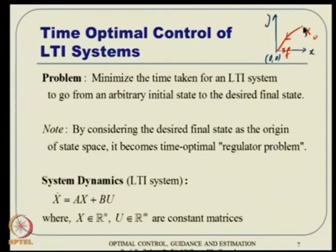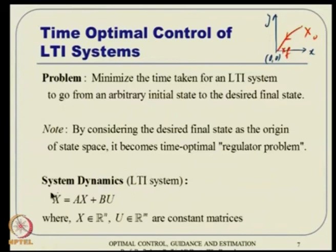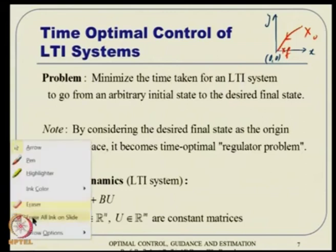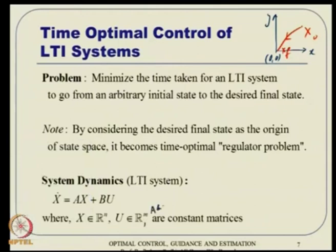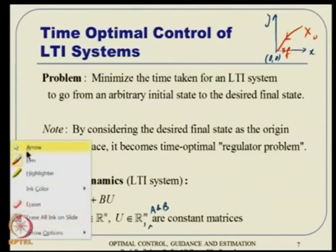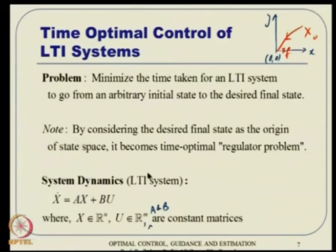Driving any initial condition in state space towards the origin is called the regulator problem — we are interested in regulating the state about the origin. This becomes a time optimal regulator problem. Because we are talking about LTI system dynamics, the system takes the form ẋ = Ax + Bu, where x is an n-dimensional vector, u is an m-dimensional vector, and A and B are constant matrices.